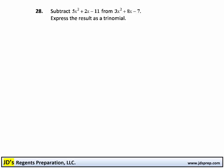This question asks us to subtract 5x squared plus 2x minus 11 from 3x squared plus 8x minus 7, and it wants us to express the result as a trinomial, which is basically just a polynomial with three terms.